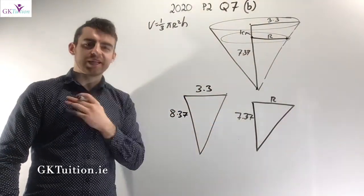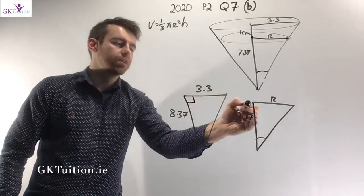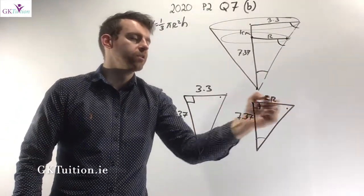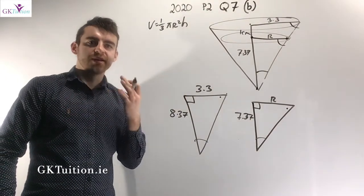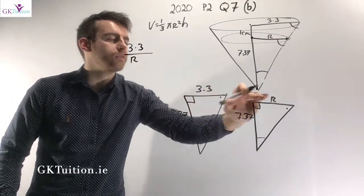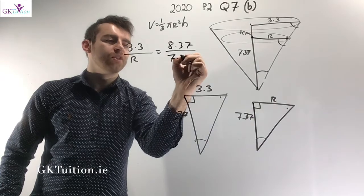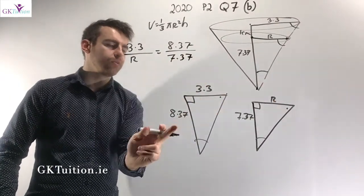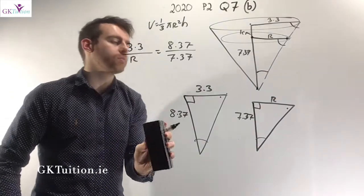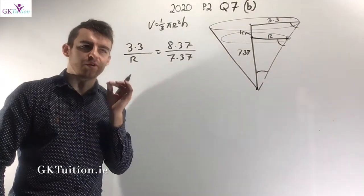You should recognise that the angle at the base of each triangle is the same, both have 90-degree angles, so the third angles also match. Since the triangles are similar, 3.3 divided by r equals 8.37 divided by 7.37. So 3.3 over r = 8.37 over 7.37. I have one equation and one unknown, so I can solve for r.